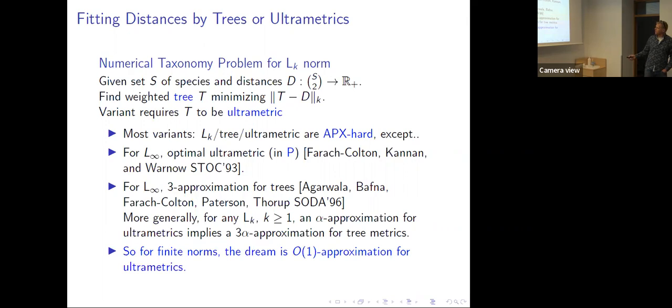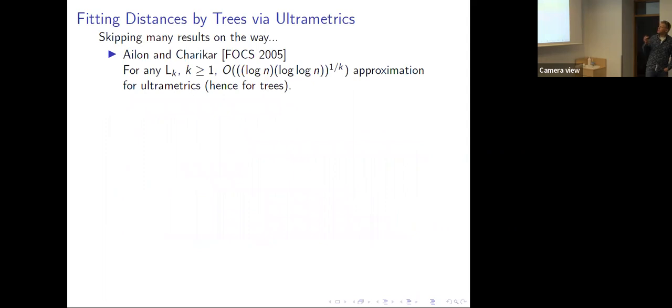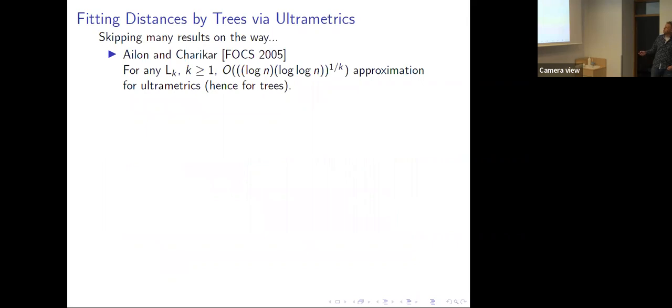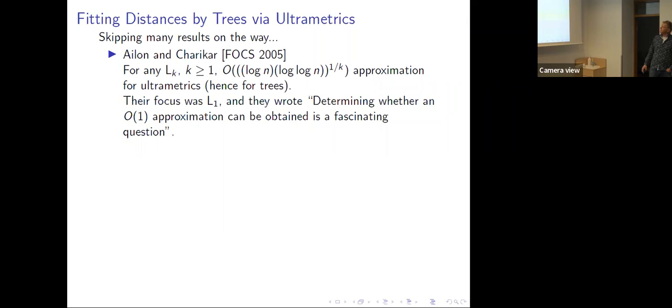For finite norms, the dream is to get a constant approximation for ultrametrics — we can't hope for better, and we can do that, getting a constant. These were the only results known for a long time. People especially tried to work on L1, and got down to square root n approximations. The latest result was Ailon and Charikar, who got down to a log n times log log n approximation for k equal to one. For higher norms, you can also get a log n times log log n approximation. They asked if it was possible to get down to a constant approximation, and this is what we did quite recently.